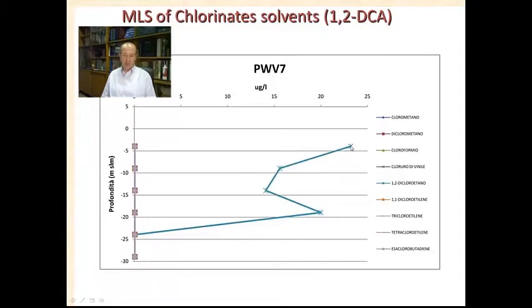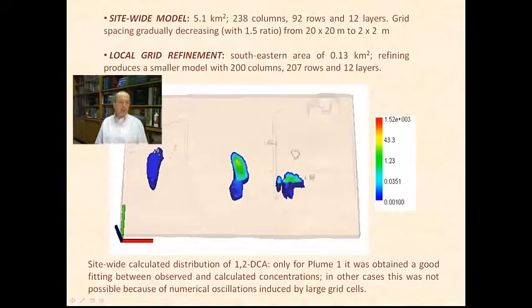As you can see, the main contaminant is related to the 1,2-DCA. The site-wide model is about 5 square kilometers with a lot of columns, rows and layers, and of course the grid has a spacing, as a space gradually decreasing. And we also implemented a very small and local grid refinement in the southern eastern area of 0.1 square kilometer because of the necessity to go into detail to verify the fate of this transport model. I want to tell you that reactive transport model at a size scale can be not very useful sometimes because you need a lot of information and it's very important to go along the transit, a 2D transit for verifying to calibrate a reactive transport model. So it's not an easy task.